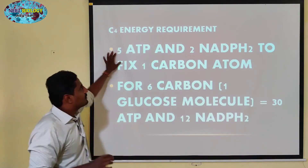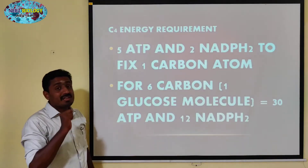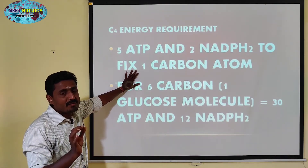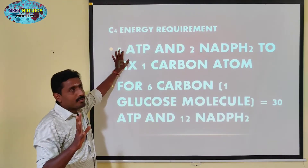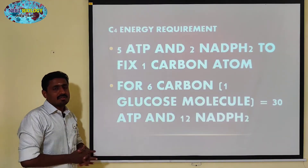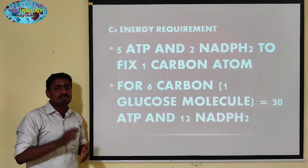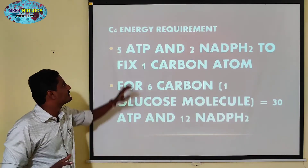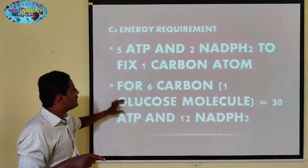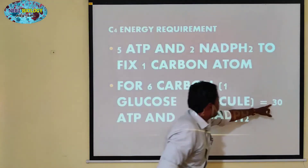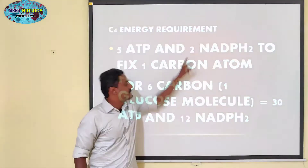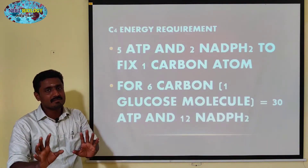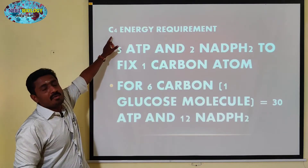5 ATP plus 2 NADPH2 are required to fix one atom of carbon. Carbohydrates — especially glucose — consist of 6 carbon molecules. For 6 molecules: 5 into 6 equals 30 molecules of ATP, and 2 into 6 equals 12 molecules of NADPH2 are needed for the C4 cycle.